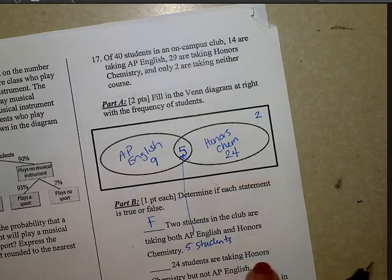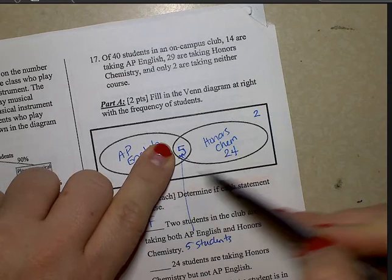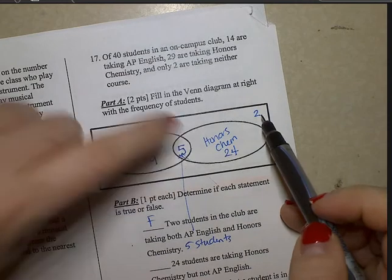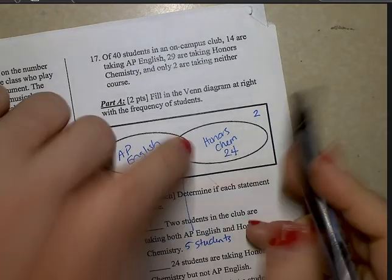24 students are taking Honors Chemistry, but not AP. So here's Honors Chemistry. We know there's 29. These 5 are also taking AP English. So 24 students are taking Honors Chemistry, but not AP. That is a true statement.